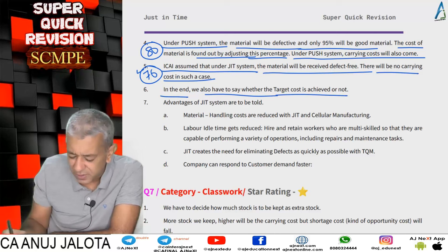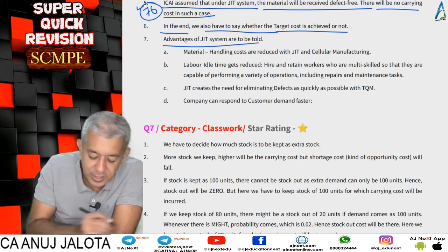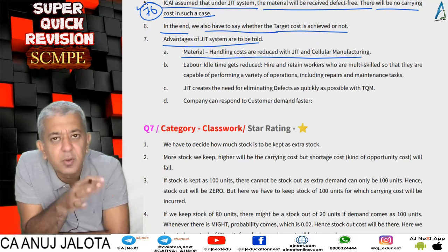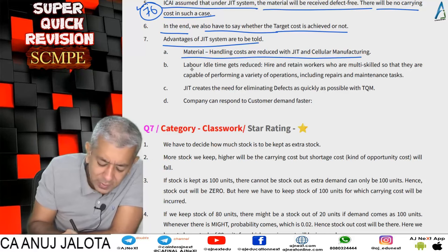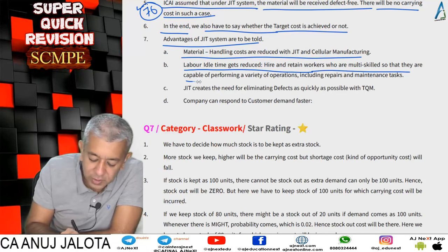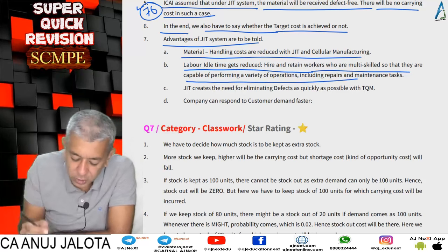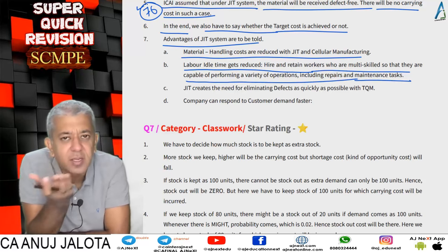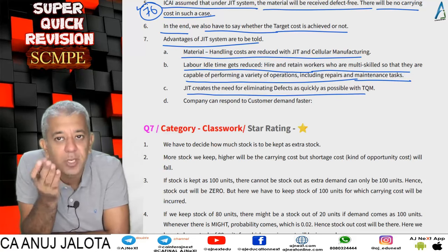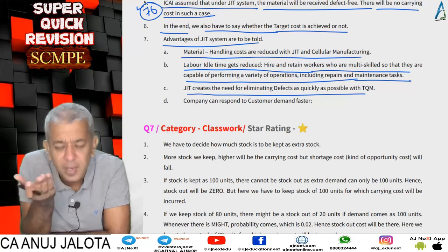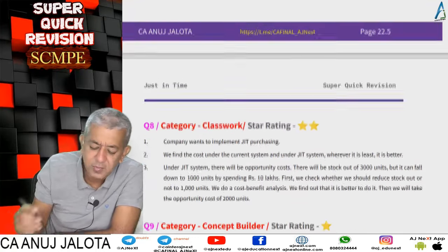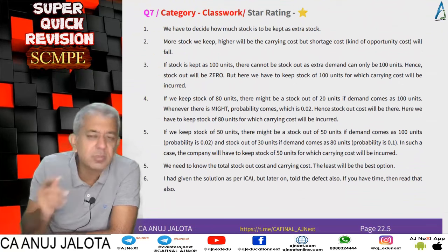In the end, we state whether the target cost is achieved — a simple part. Advantages of JIT: material handling costs are reduced with JIT and cellular manufacturing; labor idle time is reduced; hire and retain multi-skilled workers capable of operating various operations including repairs and maintenance. JIT creates a need for elimination of defects as fast as possible via TQM, and the company can respond to customer demand faster.